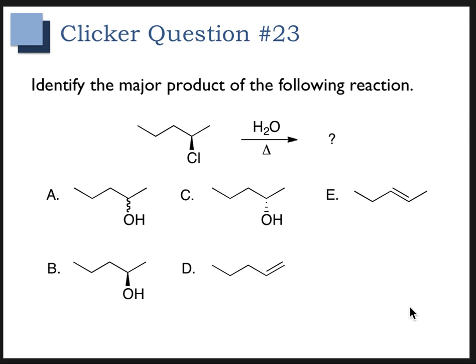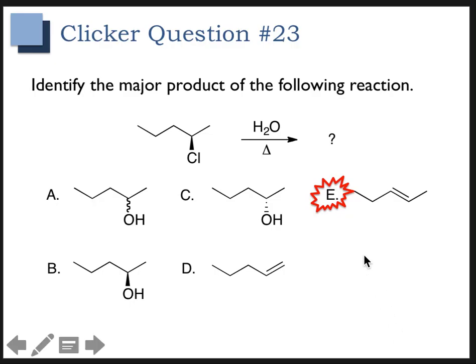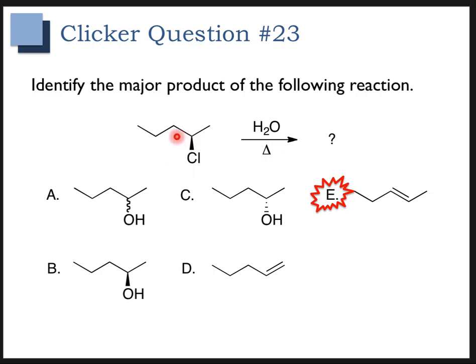For the next question, the answer is E. Notice we're using a poor nucleophile and a polar protic solvent — this tells us SN1 or E1. The heat implies E1 versus SN1. We're going to get the more substituted alkene, which is why E is favored over D.